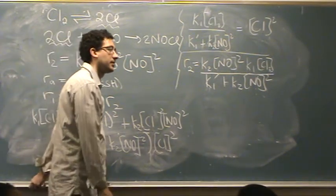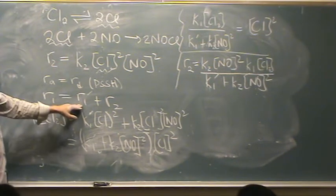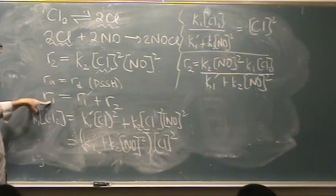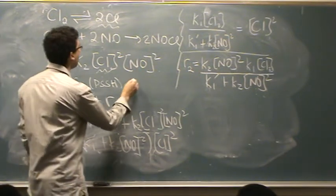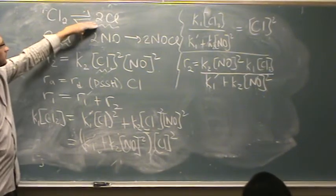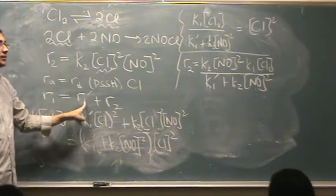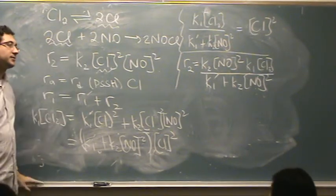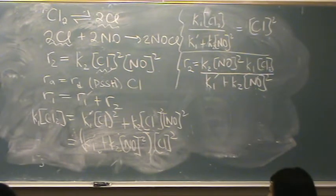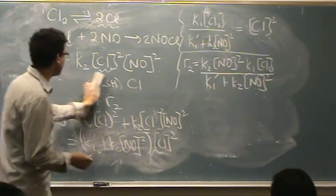A student asks: why did you set R1 equal to R1 prime plus R2? That's the PSSH assumption for Cl, the intermediate. Cl is produced in rate 1 forward, consumed in the reverse reaction, and consumed in the second reaction. That's where each term comes from.